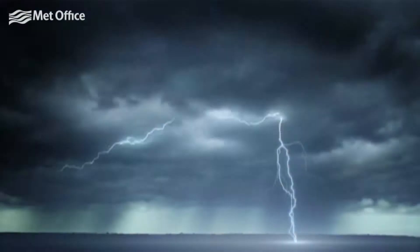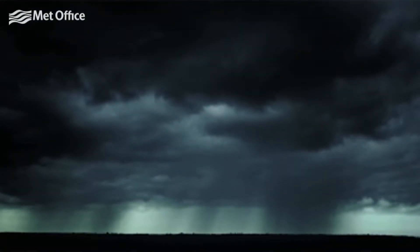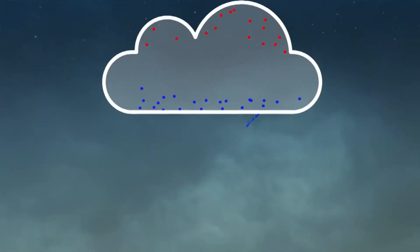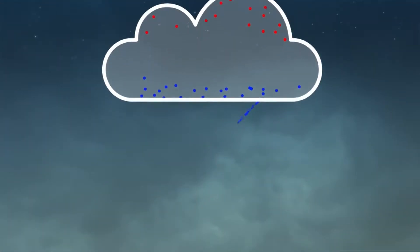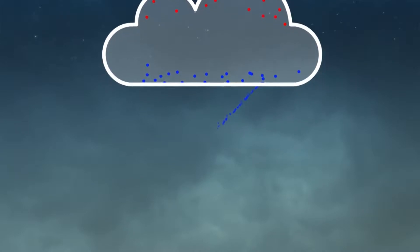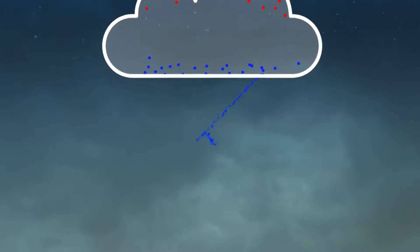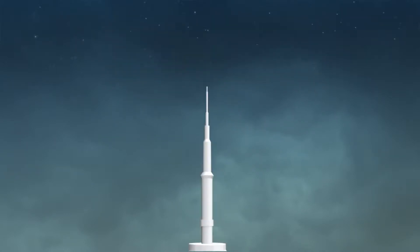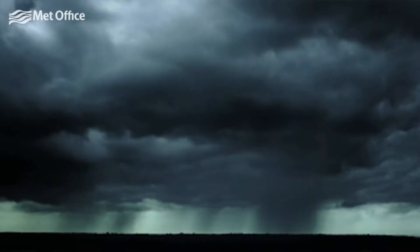Cloud-to-ground lightning is the most dangerous. These lightning strikes travel from the negatively charged bottom of the cloud to the positively charged ground. The bolts strike tall objects like trees and buildings.